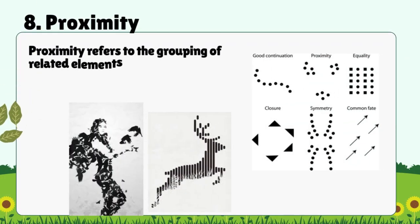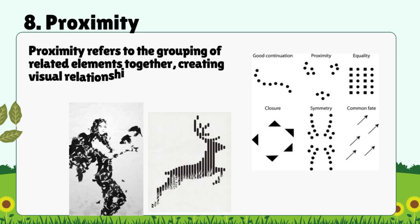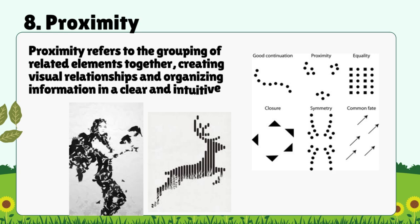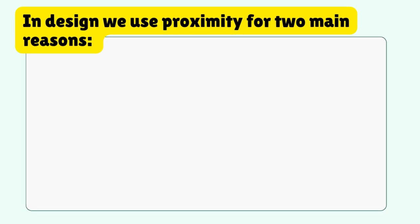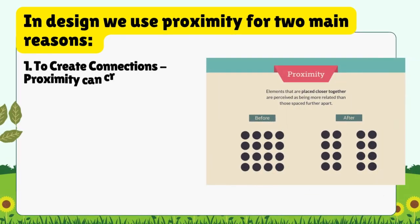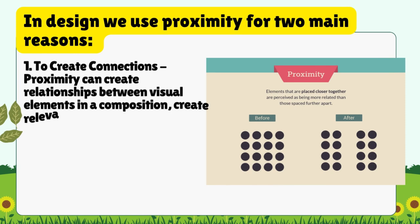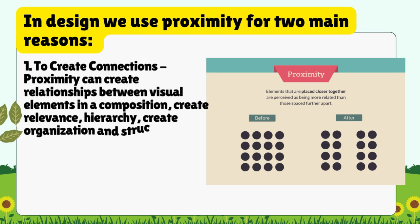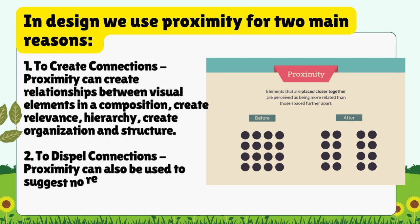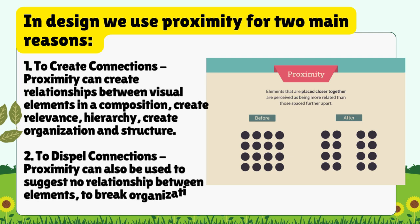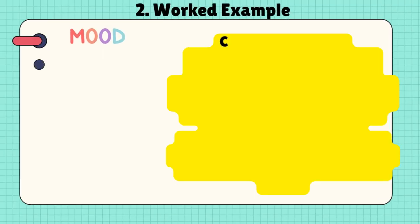8. Proximity: Proximity refers to the grouping of related elements together, creating visual relationships and organizing information in a clear and intuitive manner. In design, we use proximity for two main reasons: 1. To create connections - proximity can create relationships between visual elements in a composition, create relevance, hierarchy, organization, and structure. 2. To dispel connections - proximity can also be used to suggest no relationship between elements, to break organization and structure.